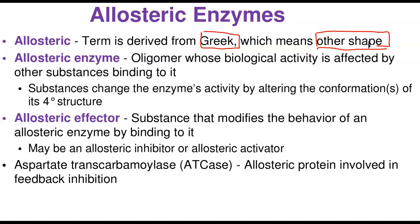The biological activity of one subunit is affected or changed by the binding of something — it could be a substrate, an activator, or an inhibitor. An allosteric enzyme is an oligomeric protein whose biological activity is affected by substances binding to it. If a substance binds on one site and affects activity on another subunit, we call that protein an allosteric protein.